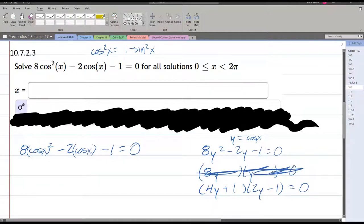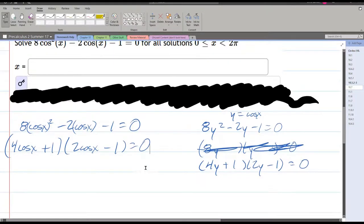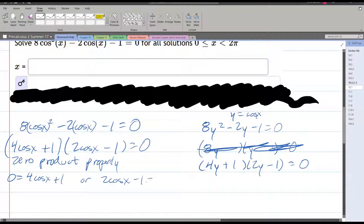So this is a factor I'm going to use. Bringing this back here, just replace y with cos x. Okay, so zero product property means that either one of these is zero.